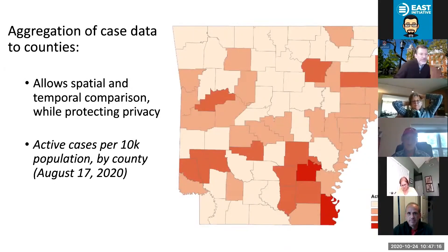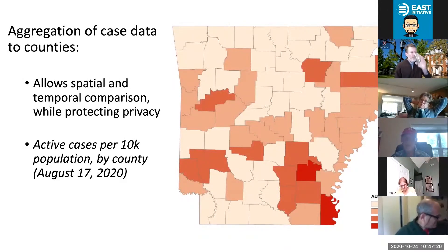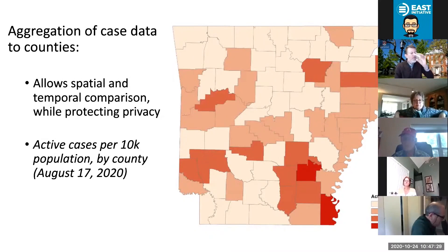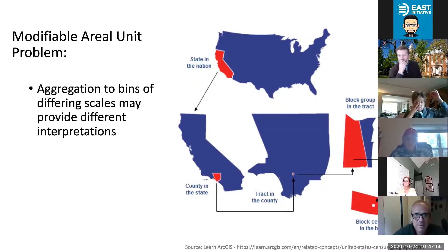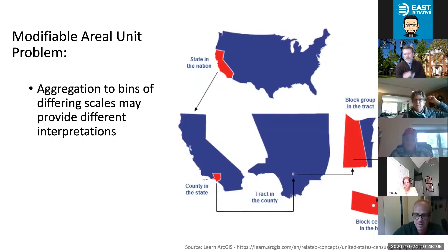This is a map you've probably seen 100 times so far this year, simply showing the number of cases per county in Arkansas, aggregating individual active cases normalized by population so we can compare apples to apples. This is on August 17th, and this allows us to spatially and temporally compare data while protecting the privacy of individuals. However, we also work with different scales of area. We often use census subdivisions such as a block group, which typically has between 600 and 3,000 inhabitants, or even a census block, which is the smallest area the census uses, defined by the intersection of natural and manmade features like roads, streams, and political boundaries.